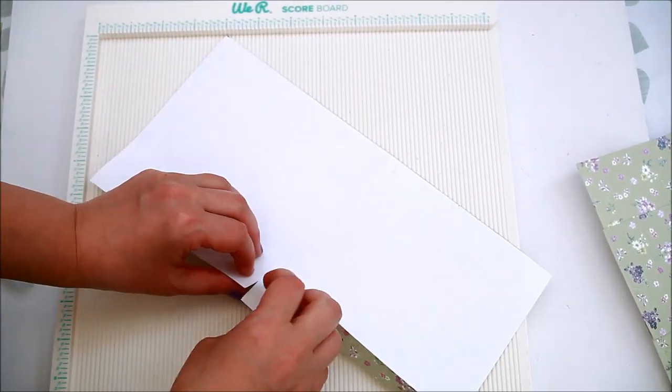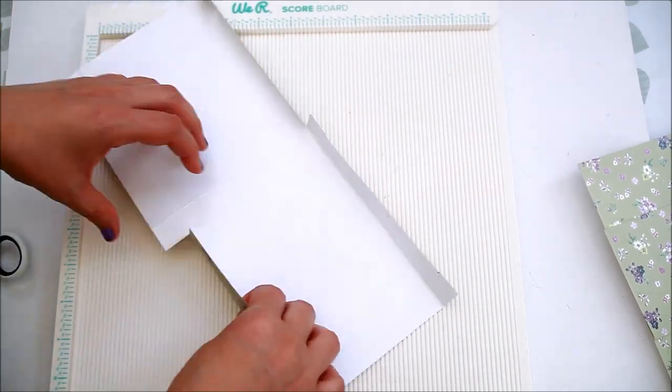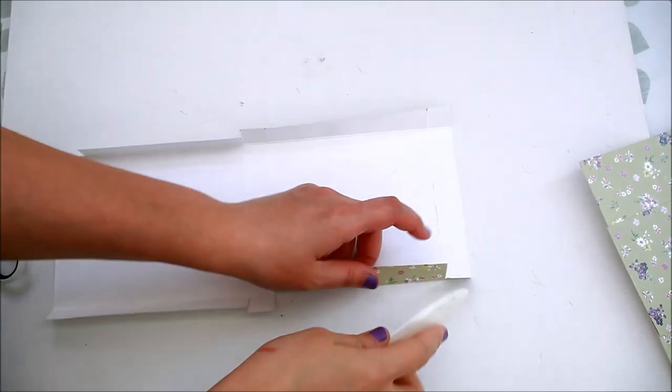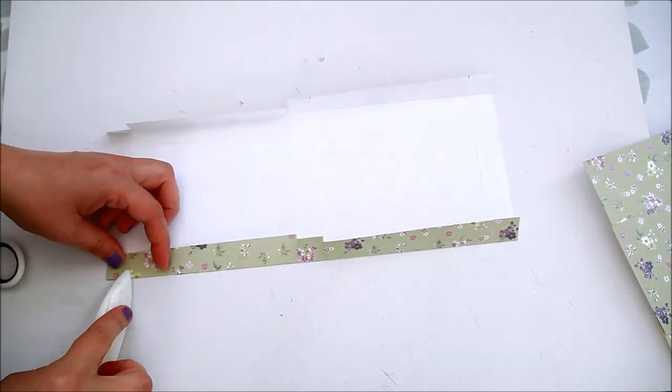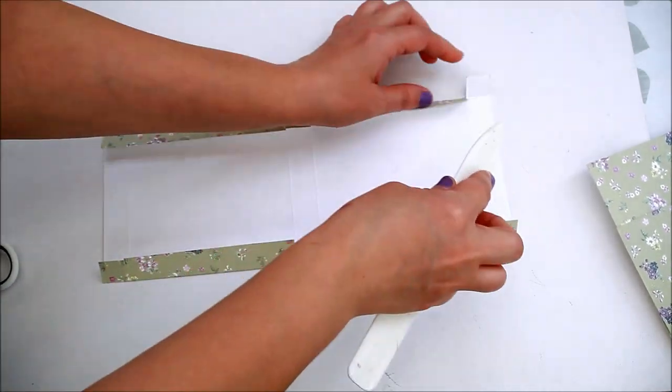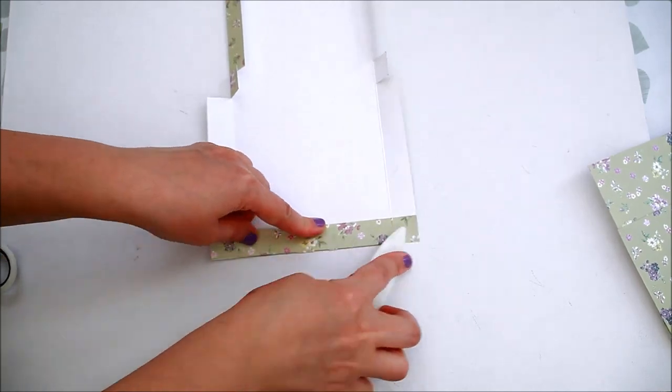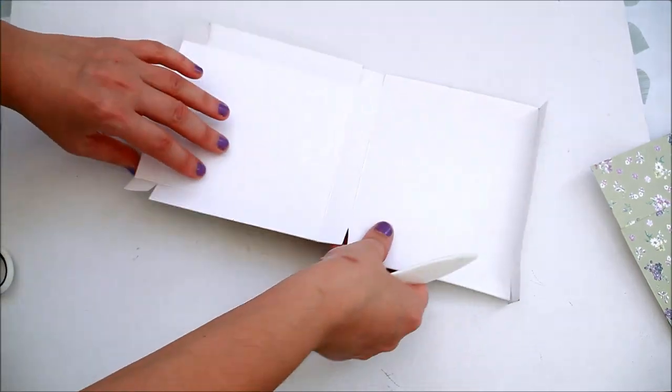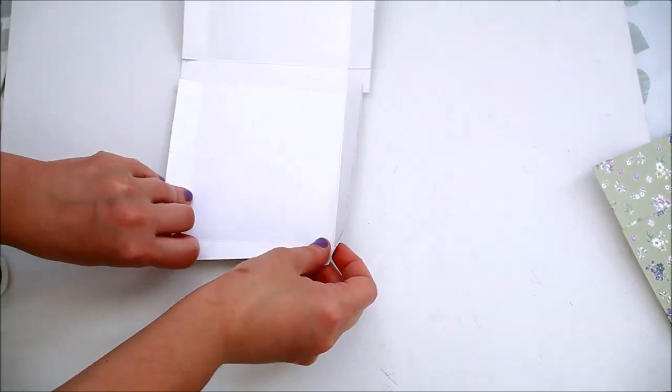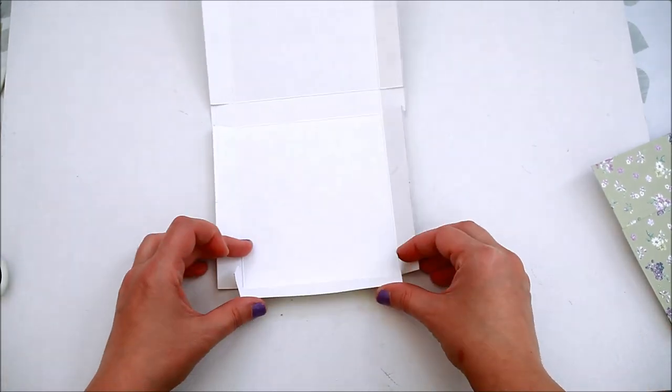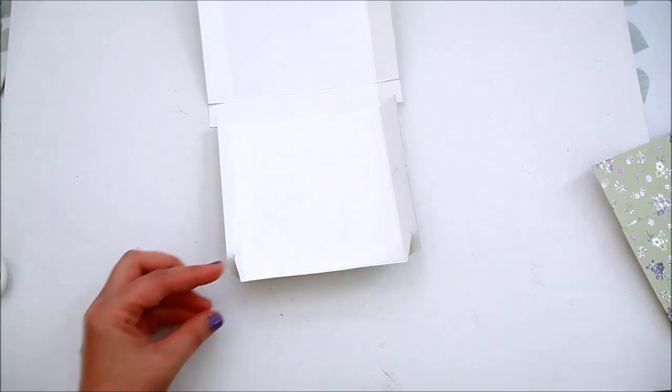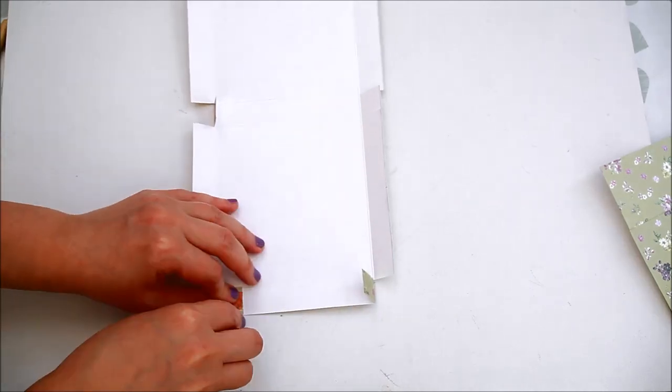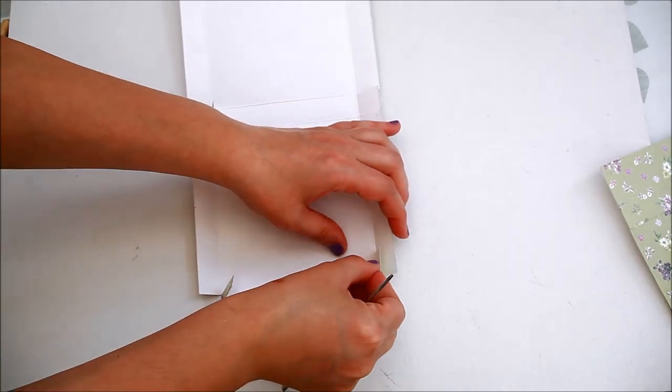Fold and burnish all the score lines. The next step is to assemble the box. In order to do that you need to add a piece of strong double sided tape on all the small flaps. Lift the flap and affix it.